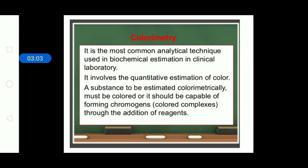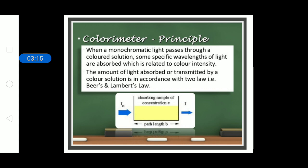The principle on which a colorimeter works states that when monochromatic light passes through a colored solution, specific wavelengths of light are absorbed, which is related to color intensity. Monochromatic light refers to a single light of definite wavelength. In visible light there are seven colors — VIBGYOR: violet, indigo, blue, green, yellow, orange, and red. Visible light is a mixture of these, but monochromatic light is a single specific wavelength.